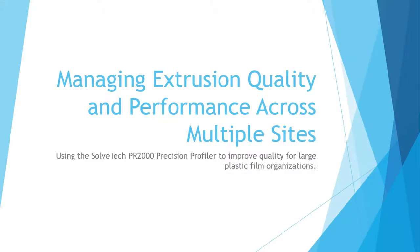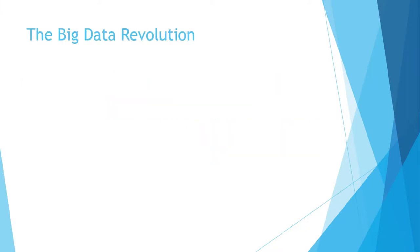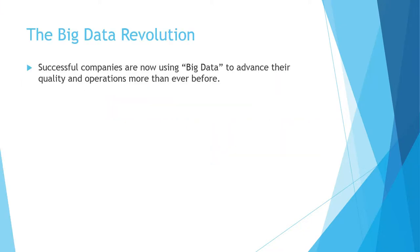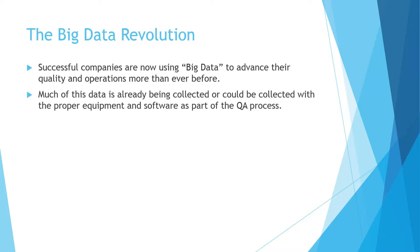What we're talking about is managing extrusion quality and performance across multiple sites for a plastic film producer. We use the SolvTech PR2000 to improve quality — not just measure quality. A big data revolution is happening throughout industry, and successful companies are now using big data to advance their quality and operations more than ever before. Much of this data is already being collected or is already available with the proper equipment and software as part of the QA process.